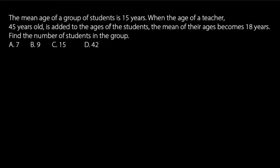The mean age of a group of students is 15 years. When the age of a teacher, 45 years old, is added to the ages of the students, the mean of their ages becomes 18 years. The question says: find the number of students in the group.